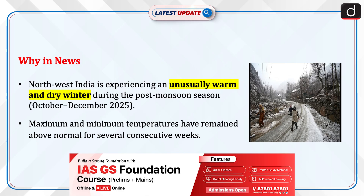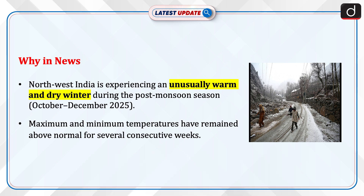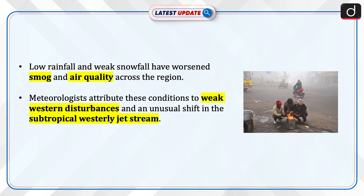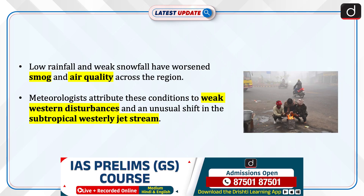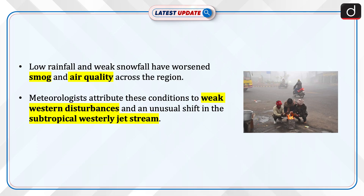Northwest India is experiencing an unusually warm and dry winter during the post-monsoon season, October–December 2025. Maximum and minimum temperatures have remained above normal for several consecutive weeks. Low rainfall and weak snowfall have worsened smog and air quality across the region. Meteorologists attribute these conditions to weak western disturbances and an unusual shift in the subtropical westerly jet stream.